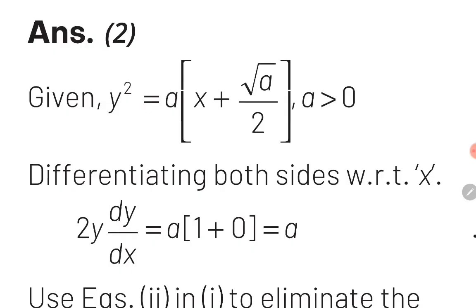The given equation is y² = a·(x + √(a/2)). Taking the derivative on both sides, the left hand side becomes 2y·(dy/dx) and on the right hand side it will become a·(1 + 0), because the derivative of x is 1 and the derivative of the constant term √(a/2) is 0. Through this, we obtain the value of a as equal to 2y·(dy/dx).